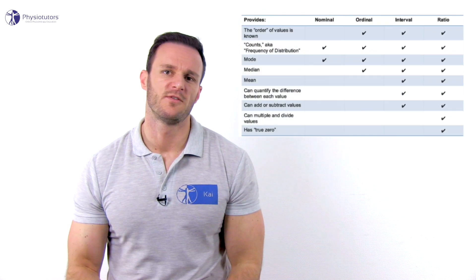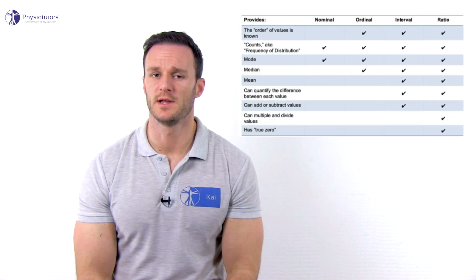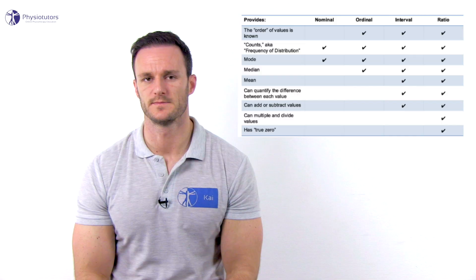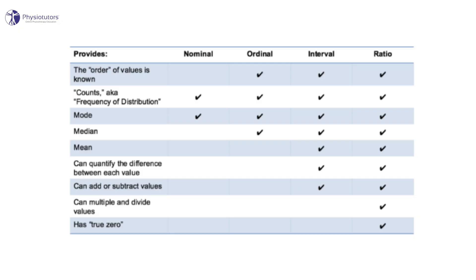So why is it important to know all this? The type of data measurement scale determines what we are allowed to do with the data when we want to express the data's tendency and variance. In the following table you will see a summary of our possibilities. An important aspect is the central tendency of the data, which can be described by mode, median, and mean. If you want to know more about those terms, click on the video in our end card.